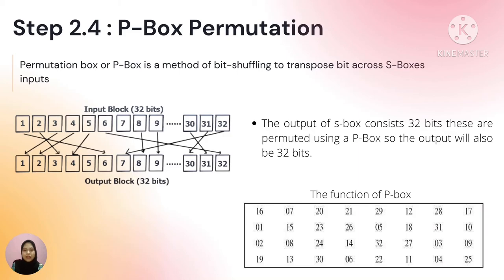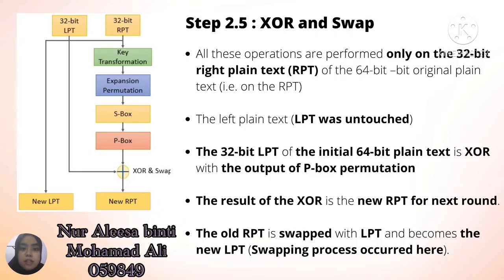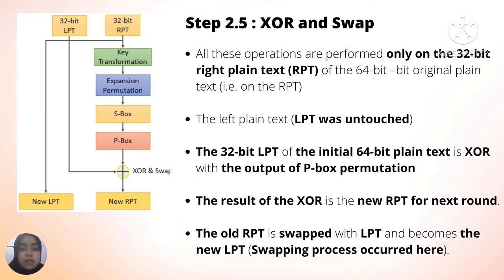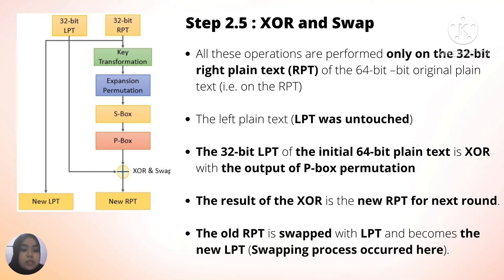The next step will be explained by Alissa. For my part, I will explain the last step in step 2, which is the XOR and swap. All along these operations, we have only used the 32-bit right plaintext, RPT. The left plaintext, LPT, was untouched. In this process, the 32-bit LPT will be XORed with the output of the P-box permutation. The result of the XOR becomes the new RPT for the next round. The old RPT is then swapped to become the new LPT, and the swapping process occurs here.